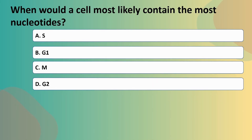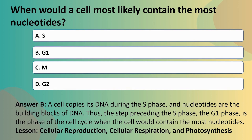Next question: when would a cell most likely contain the most nucleotides? A: S phase. B: G1 phase. C: M phase. Or D: G2 phase? Recalling the cell cycle: G1 is the growth phase, S is the DNA replication phase, G2 is the preparation for division, and M phase is the division into daughter cells. A cell copies its DNA during the S phase, and nucleotides are the building blocks of DNA. So the step preceding the S phase — which is the G1 phase — is when the cell would contain the most nucleotides. The answer is B.